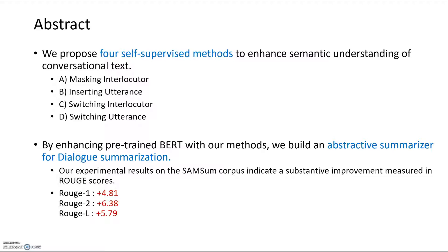In this paper, we propose four different self-supervised methods to enhance semantic understanding for conversational texts like dialogue. The methods include masking interlocutor, inserting utterance, switching interlocutor, and switching utterance. By enhancing the pretrained BART with our method, we build an abstractive summarizer for dialogue summarization.